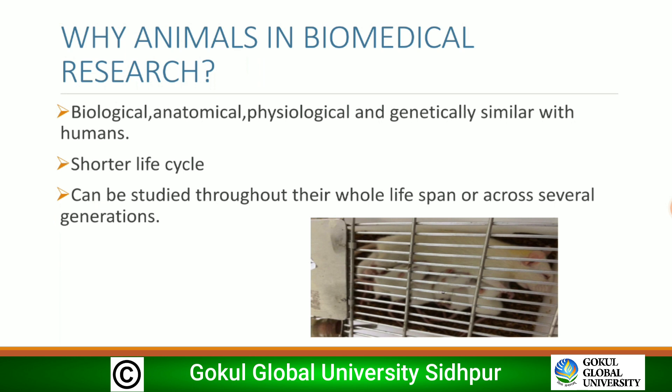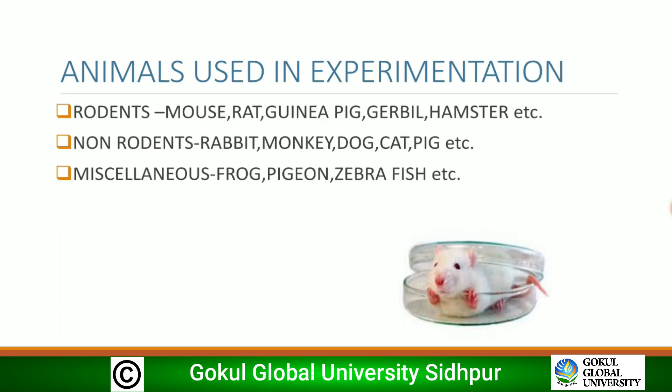Animals are used in biomedical research because they are biologically, chemically, physiologically, and genetically similar to human beings, and they have a comparatively shorter life cycle, so they can be studied throughout their whole lifespan or across several generations. Commonly used animals are experimentally classed as rodents — mouse, rat, guinea pig, gerbil, hamster — non-rodents such as rabbit, monkey, dog, cat, pig, and miscellaneous such as frog, pigeon, and zebrafish.